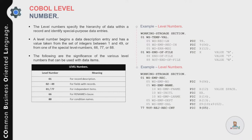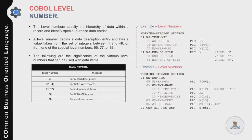In the next example, we have a Working Storage Section with WS-EMP-REC as a group variable containing several elementary items: employee number, and employee name which is itself a group variable containing WS-EMP-FIRST-NAME defined as X(12) with a default value of SPACE. The last variable is defined at level 77 as TOTAL-REJECTED-RECORD-COUNT — remember level 77 is only used for independent items, not group variables.